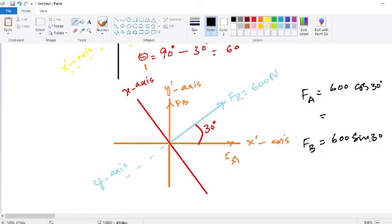So if we are going to evaluate the value, let me find the values. 600 cos of 30 it will be equals to 519.62. And for F of B the value will be equals to 300 Newton. These are both results.